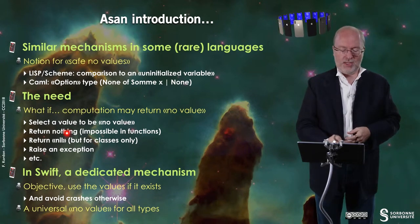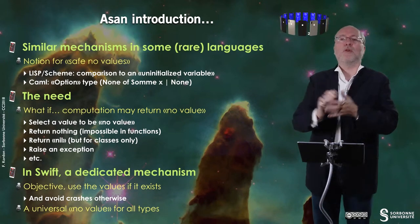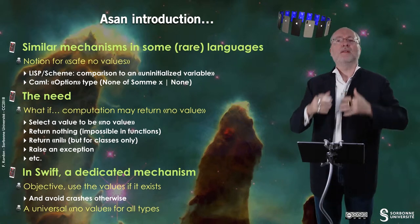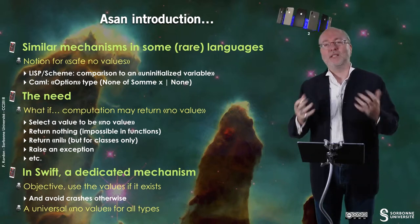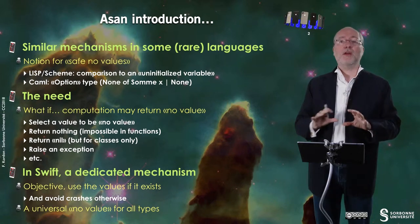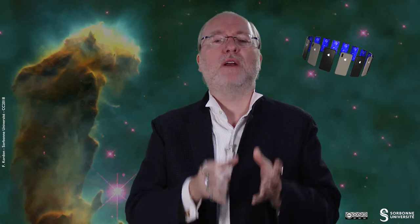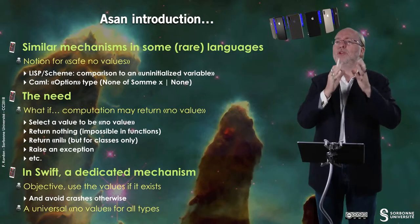Another solution is to return nothing, but in functions you cannot return nothing. You can return nil, which is nice for classes or references to memory or pointers, but not for basic types. In some situations you can raise an exception. In Swift, there is a dedicated mechanism. In Swift, any type has a sort of universal nil value associated to it, so you can be in a situation where either you have a value that is returned, or you have this specific universal value that means no value.